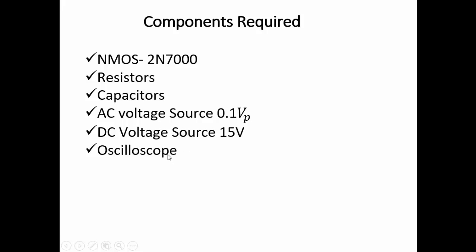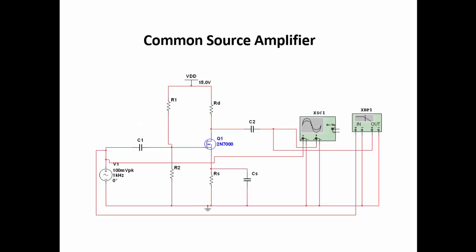This is the circuit diagram for the common source amplifier. The input signal is given to the gate terminal and the output is taken at the drain terminal; the source terminal is grounded. Resistors R1 and R2 form the voltage divider biasing at the gate terminal. Rd is the drain resistance as the load, and RS is the source resistance for Q-point stabilization.